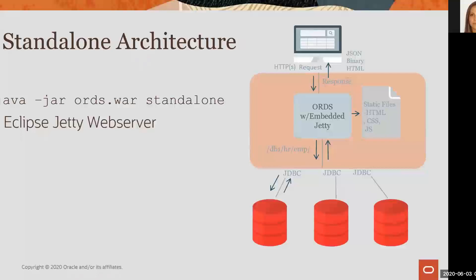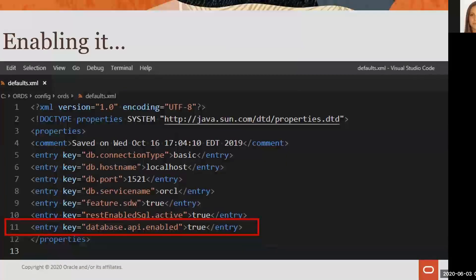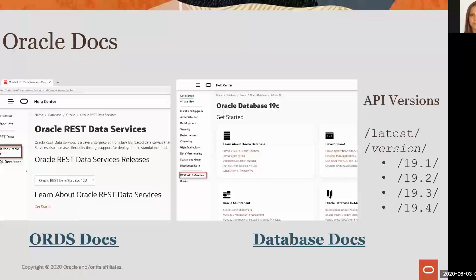This is a high-level architecture diagram. ORDS stands between your REST client or your application and the database. In my demo I've used the standalone architecture, but you can also run it on top of an application server like WebLogic or GlassFish. To enable the database management API, you set the value of a parameter to true — no need to code anything. I've included links to the ORDS documentation and to the REST API documentation, and it is recommended to use the latest version of the APIs.